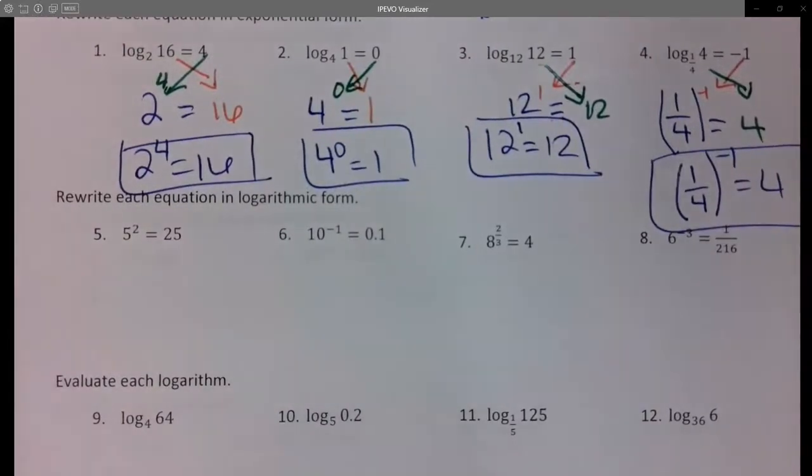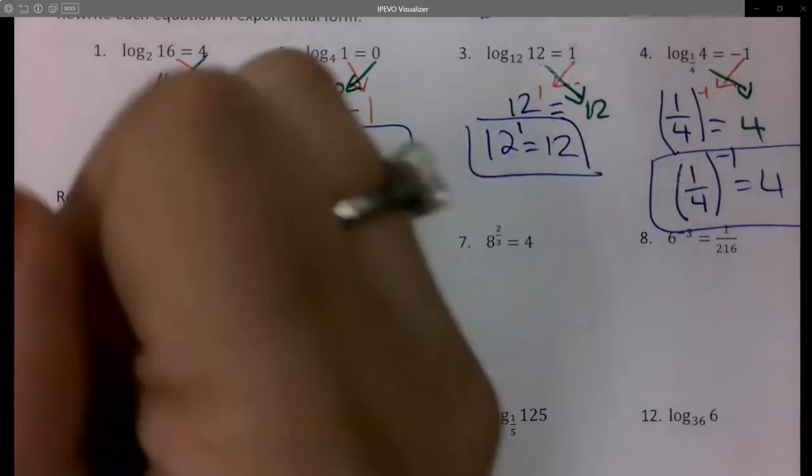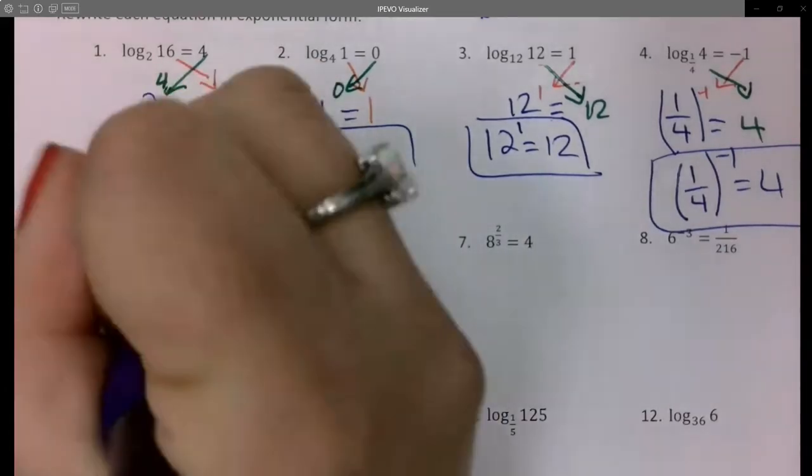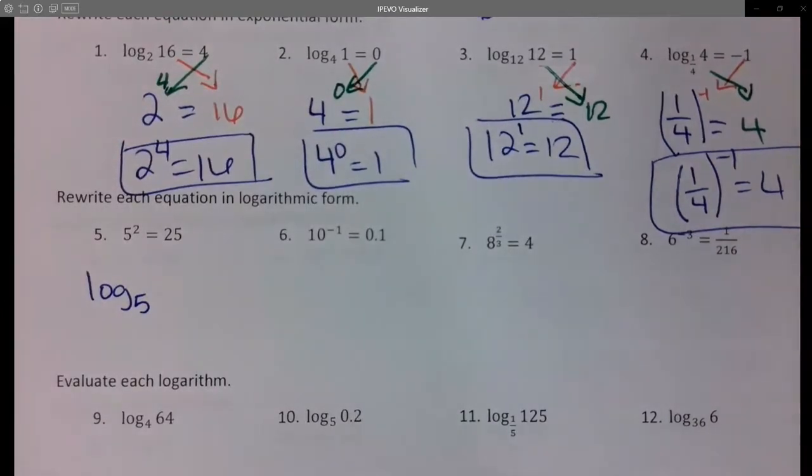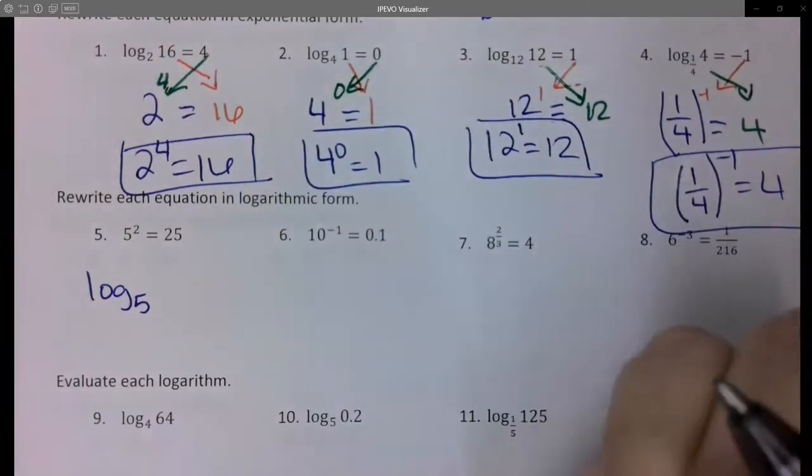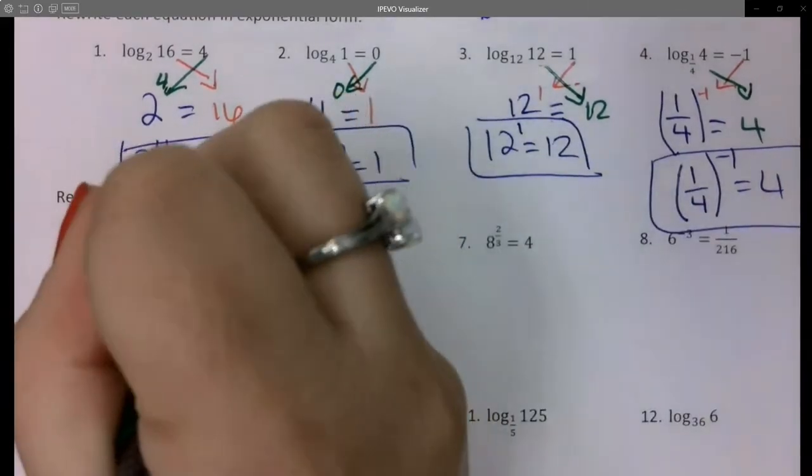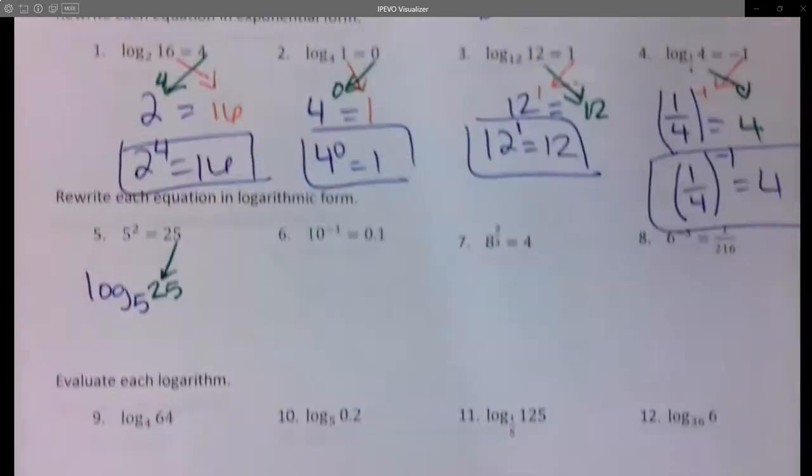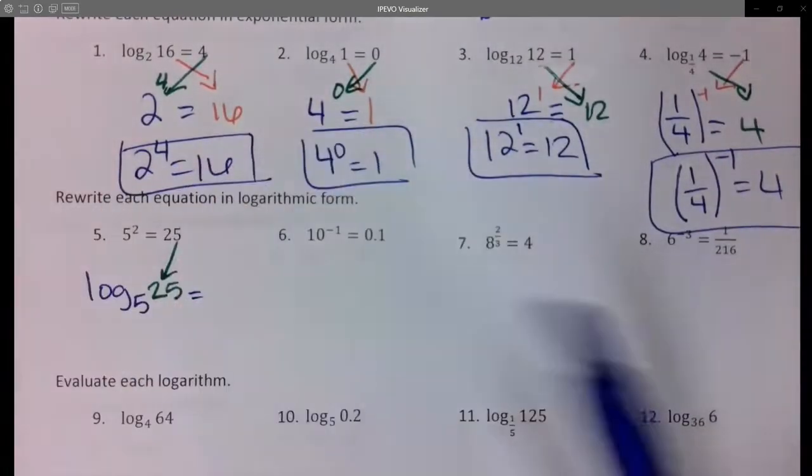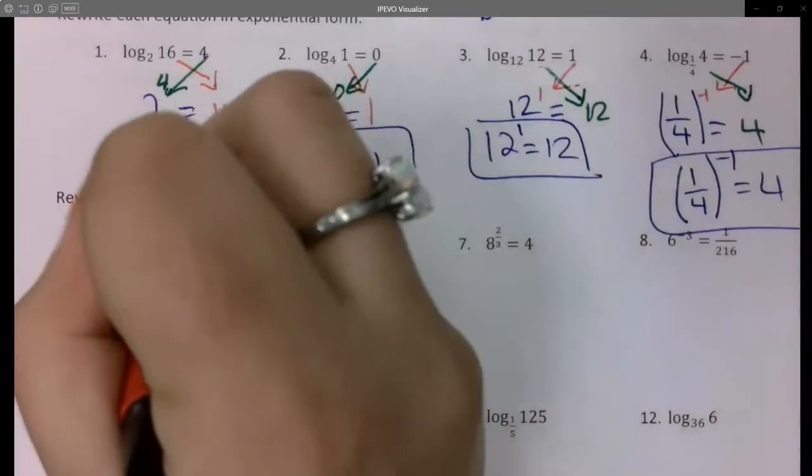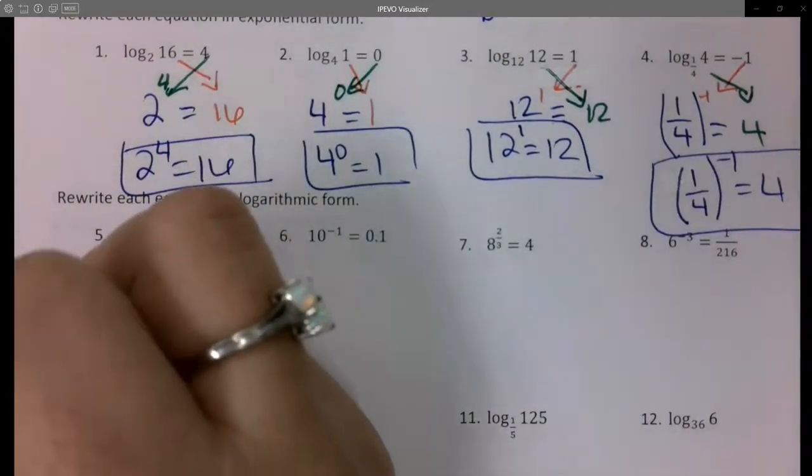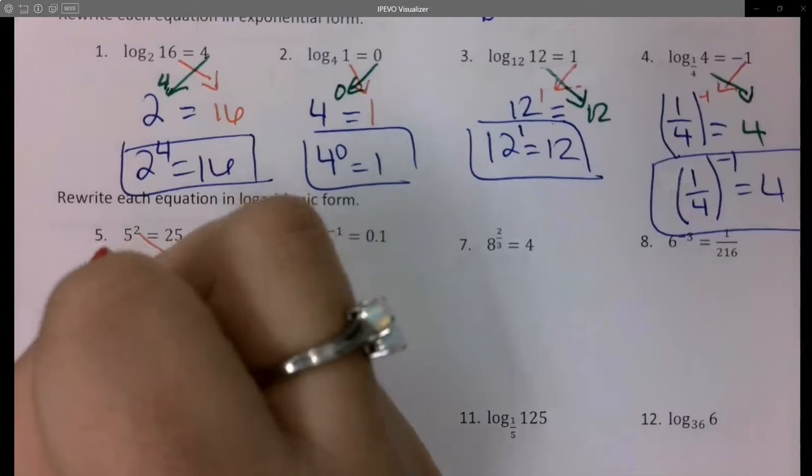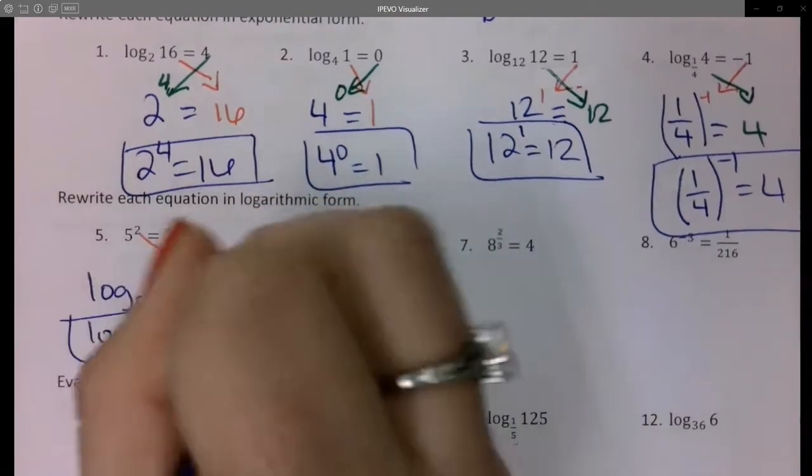Okay, so numbers 5 through 8 I'm going the other way around. So I'm going to write the word log, and then my base is the little tiny number next to the log, and then my numbers will switch. So I'm going to have the 25 go down here and then this 2 go right here. So I have log base 5 of 25 gives me 2.